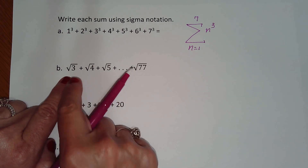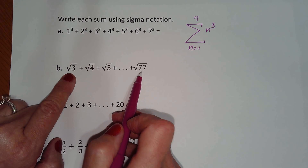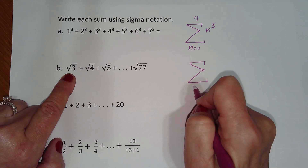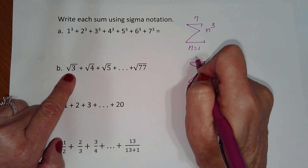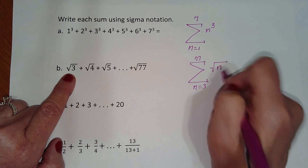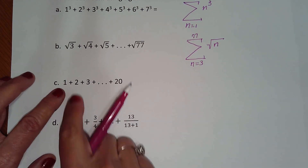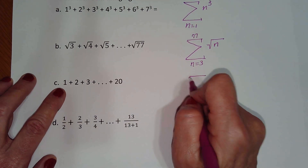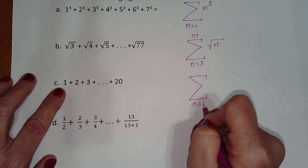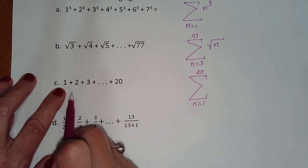Let's look at the next example. It looks like the counting numbers from 3 to 77. So n equals 3 is our lower limit and we end at 77, and we're going to take the square root of each of them. The next example starts at 1, ends at 20, and it's just n.